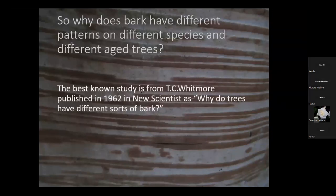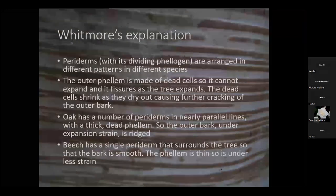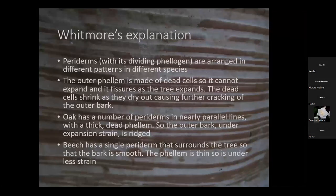But that doesn't really explain why they've got different bark patterns. The best-known study is from T.C. Whitmore, published in 1962 in New Scientist, entitled 'Why do trees have different sorts of bark?' What Whitmore said was that the periderm — that outer bark with its dividing phelogen — is arranged in different patterns in different species, and is not continuous as the tree gets older.